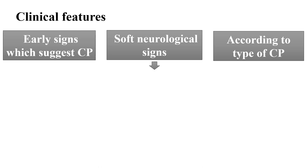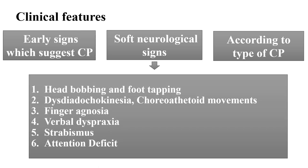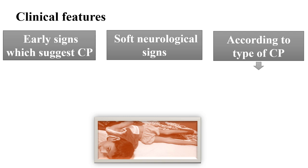Soft neurological signs include head bobbing, foot tapping, dysdiadochokinesia, choreoathetoid movements, finger agnosia, verbal dyspraxia, strabismus, and attention deficit. Based on these we can suspect CP.